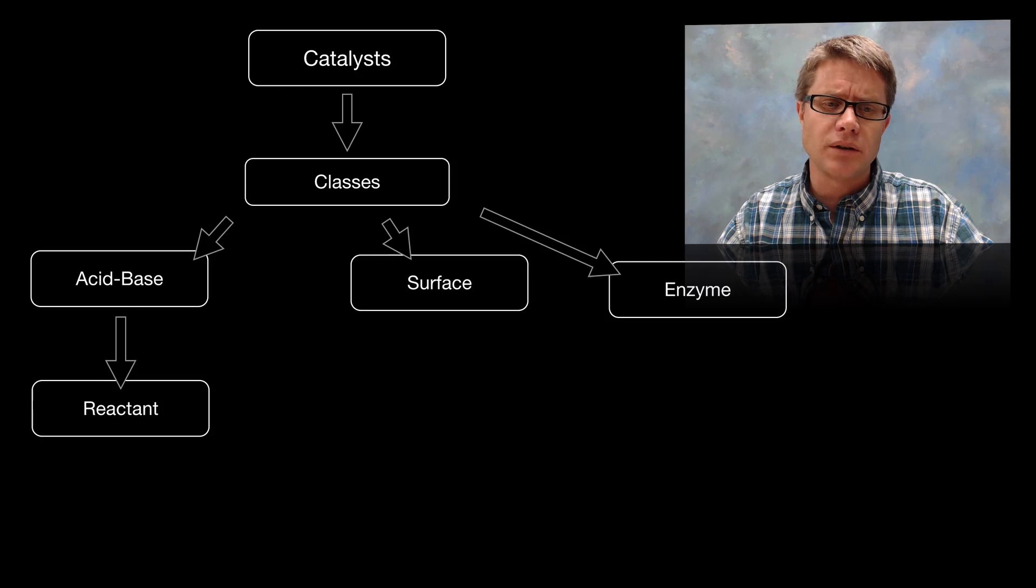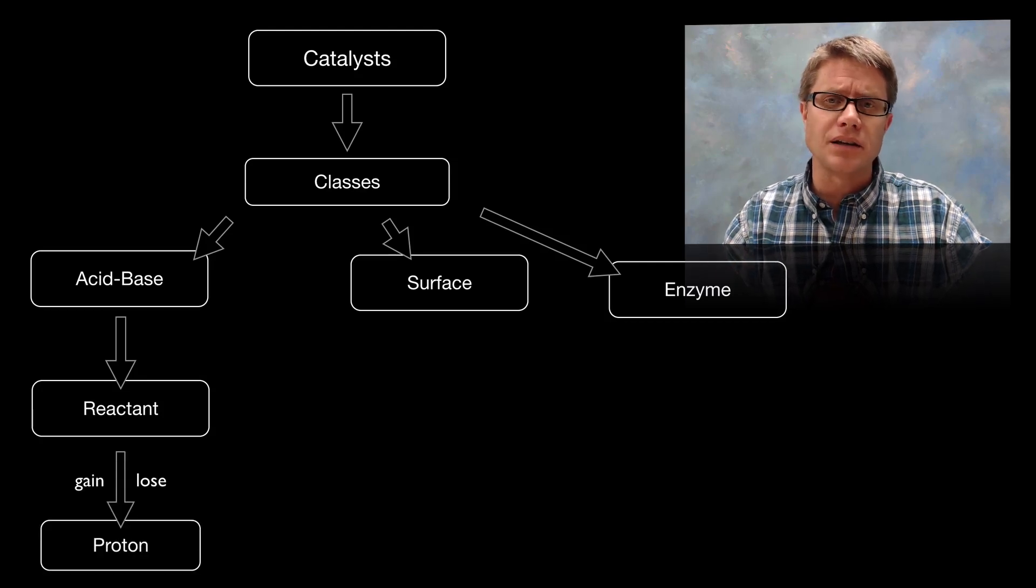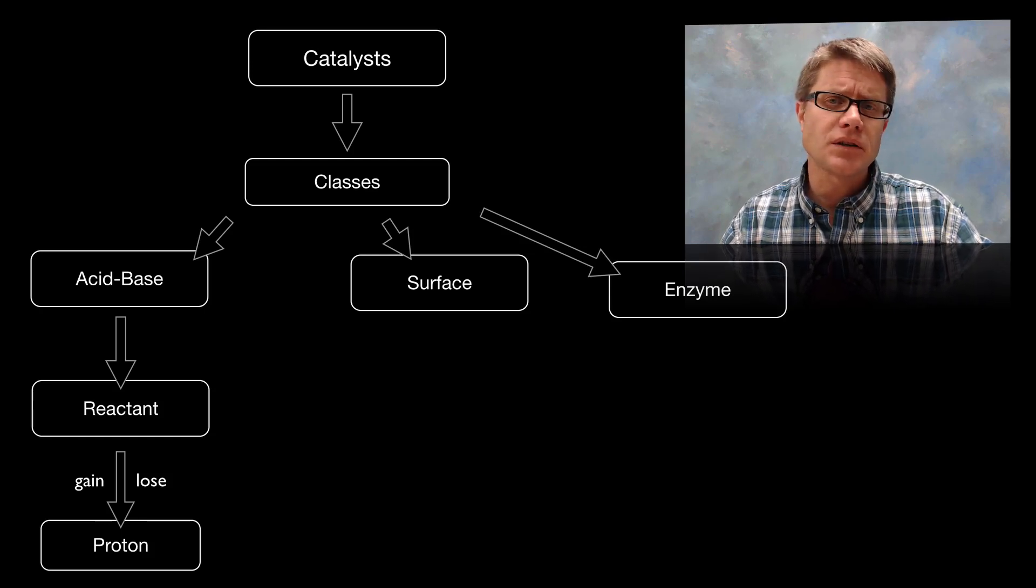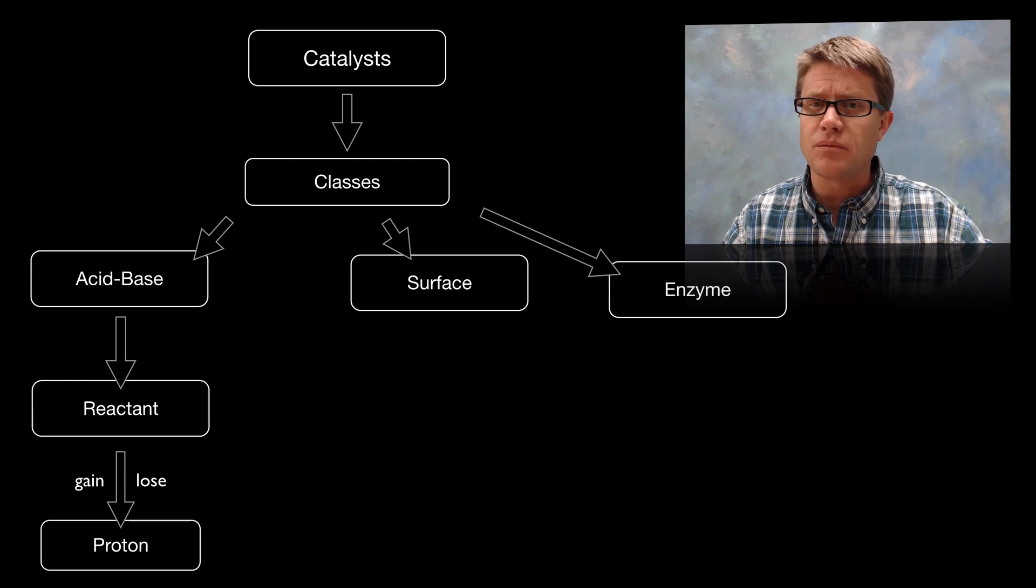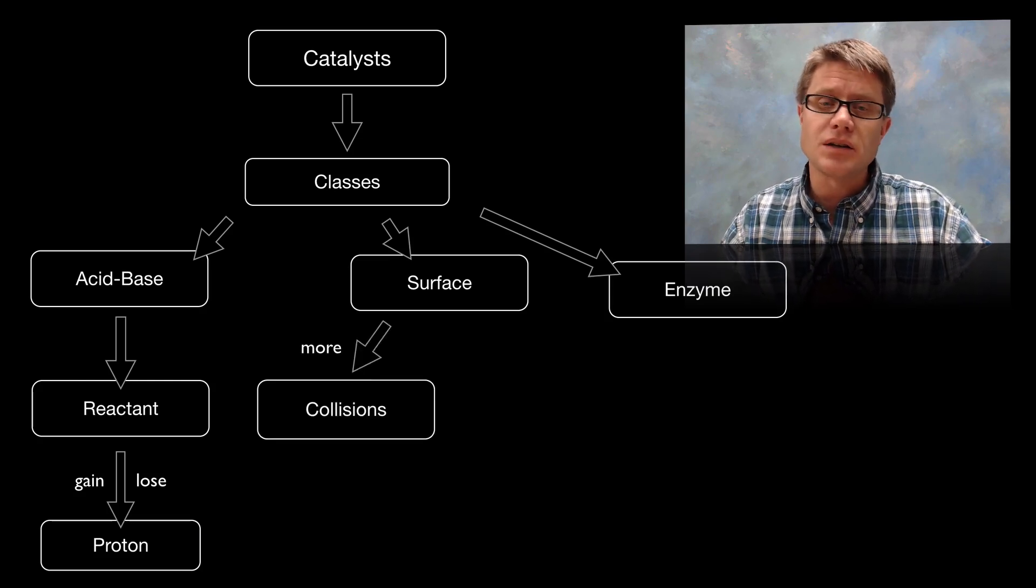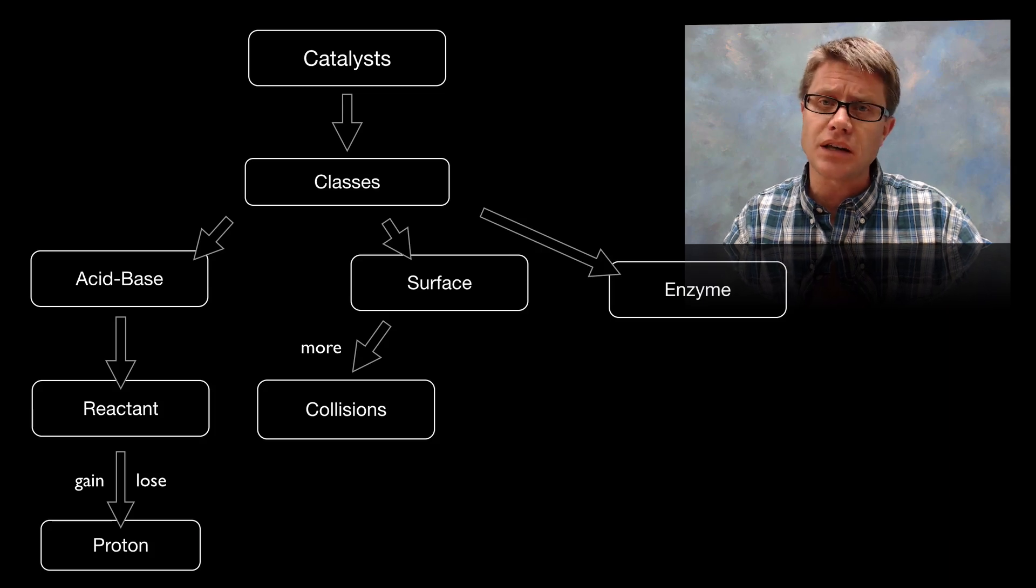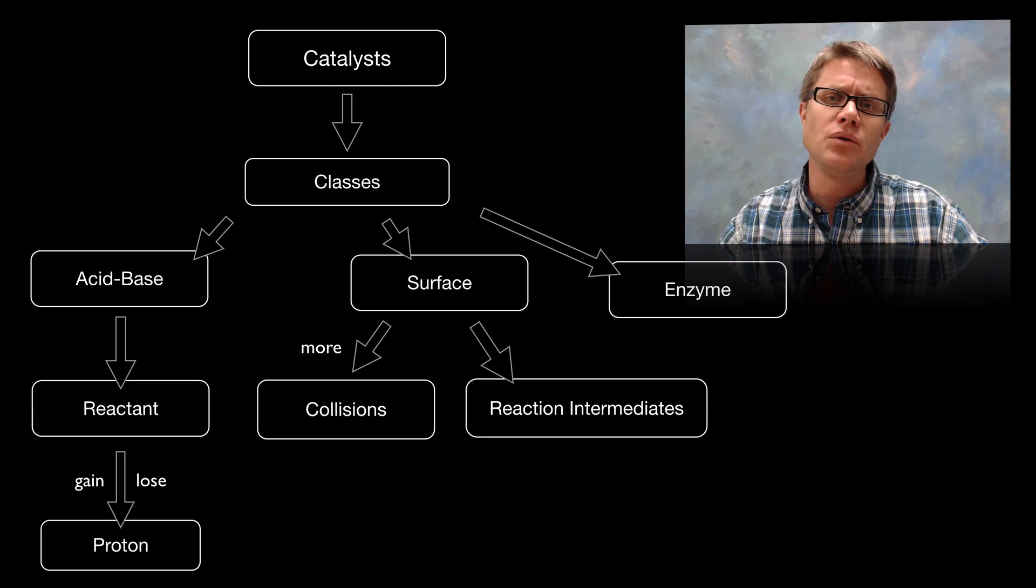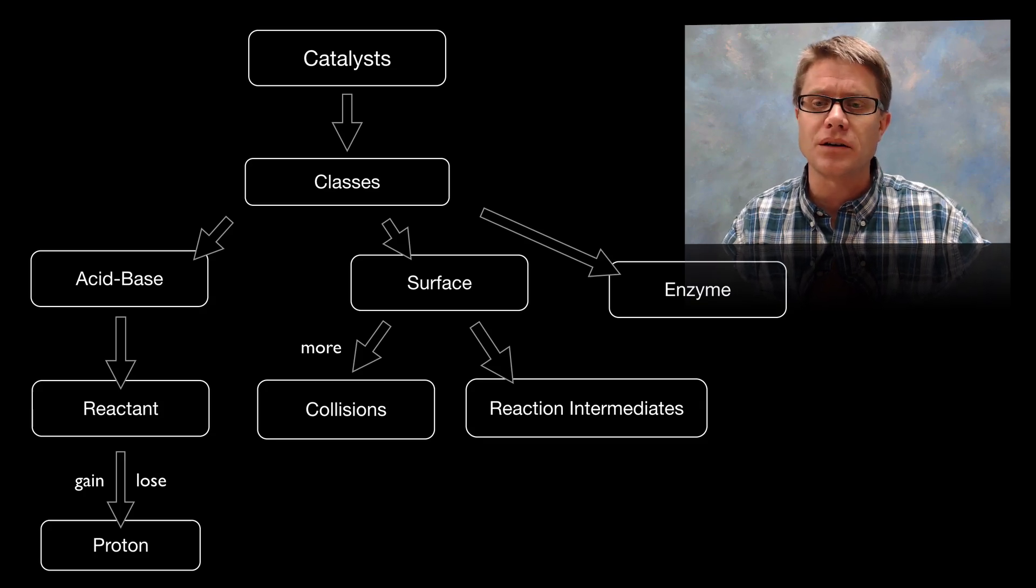How does an acid base catalyst work? Well essentially it's going to take one reactant and we're either going to add a proton to it or we're going to pull a proton away. And as we do that, that's going to speed up the reaction. A surface catalyst is generally going to be made of metal. And if we can increase the surface area it's going to work better. What it does is it increases the number of successful collisions in a reaction, and it also can create new reaction intermediates or new steps in this overall reaction mechanism.